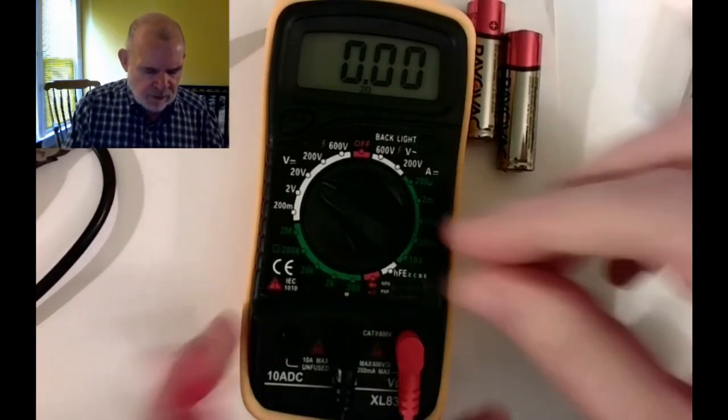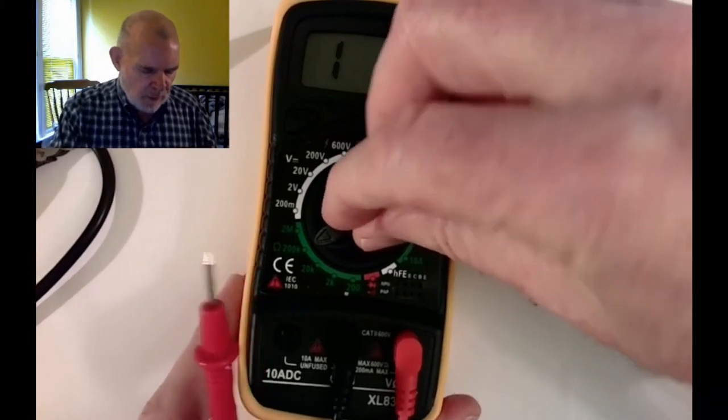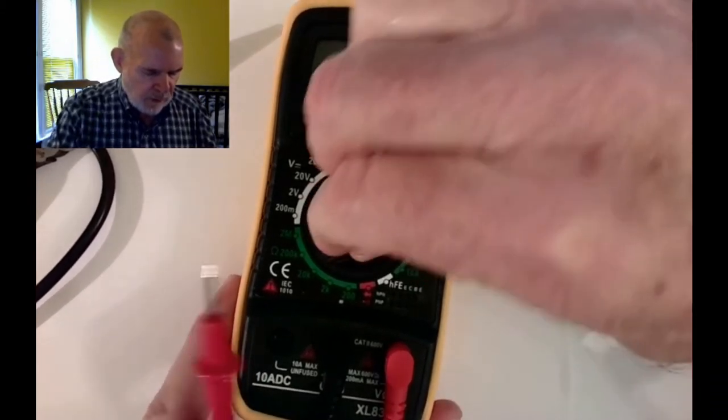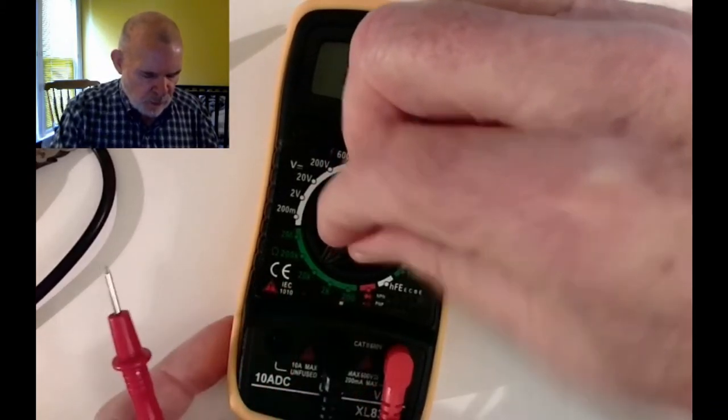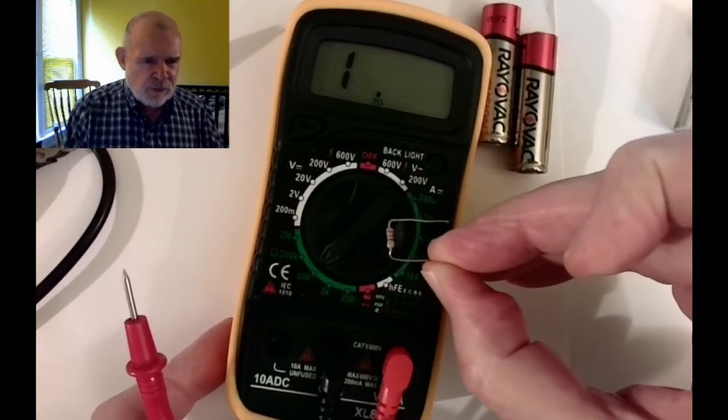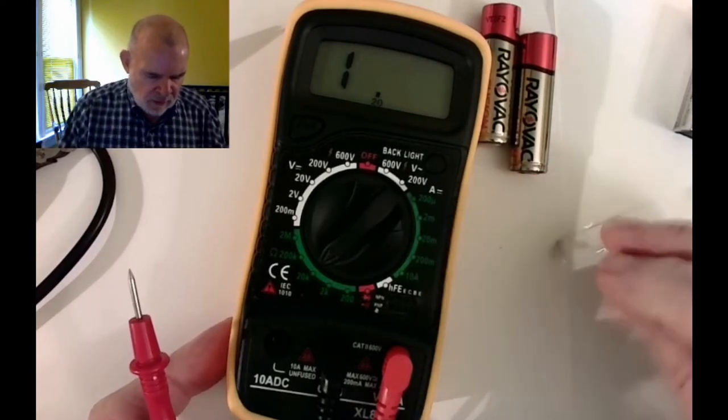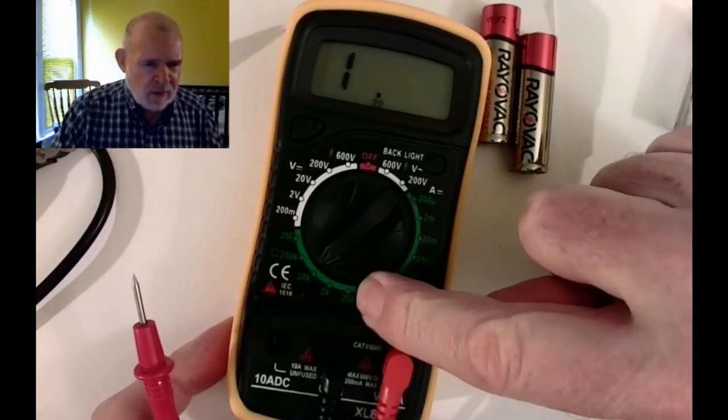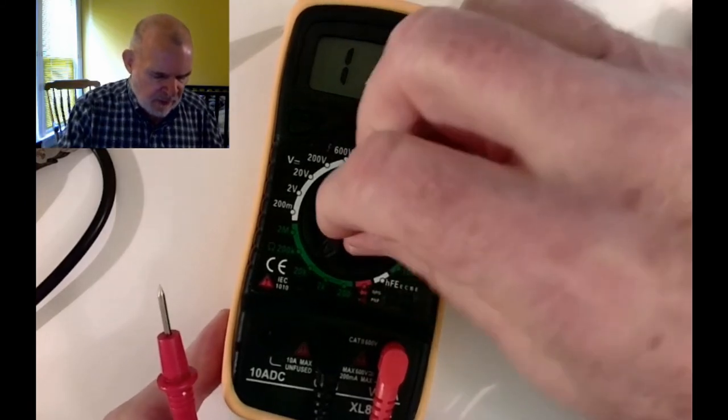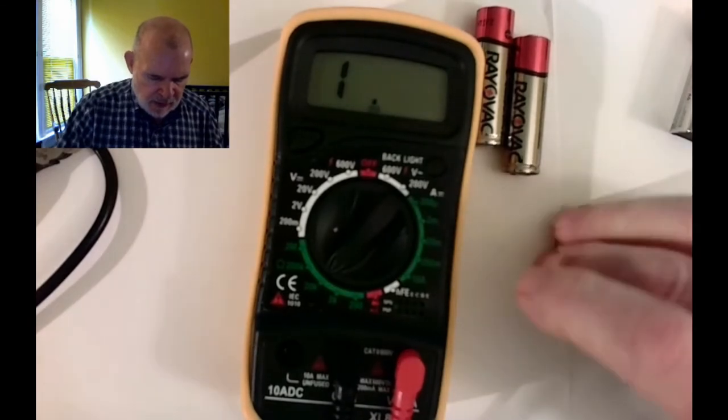To measure resistance, we're going to use one of these green scales. Again, the rule applies - if you don't know, set it to a higher number than what you want. For example, I'm going to measure this resistor which I happen to know is 220 ohms. The 200 scale would not work because that's not high enough. But let's say I don't really know, and I'll put it on the 20k scale.